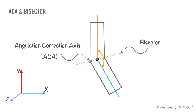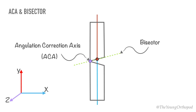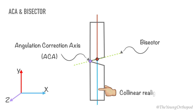Angular correction along the bisector results in complete deformity correction without the introduction of translational deformity. The collinear realignment of the proximal and distal axes occurs whenever the ACA is matched to any point on the bisector of an angular deformity.